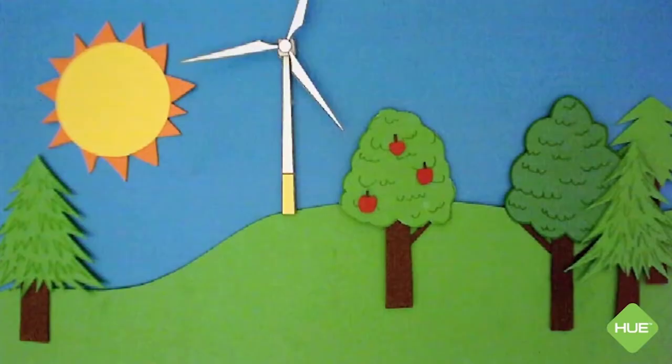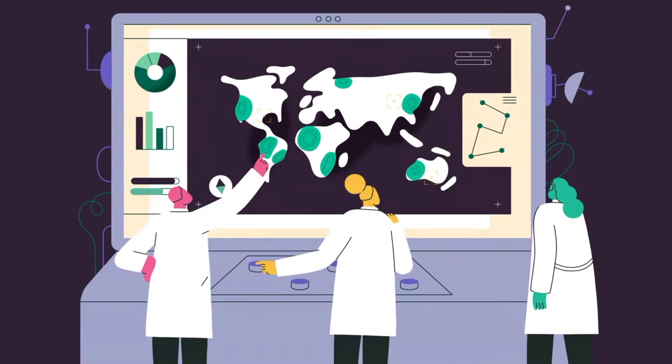According to research published in a science journal, if we plant the amount of trees equal to the area of the United States of America, we can reduce CO2 from our environment up to 25%.